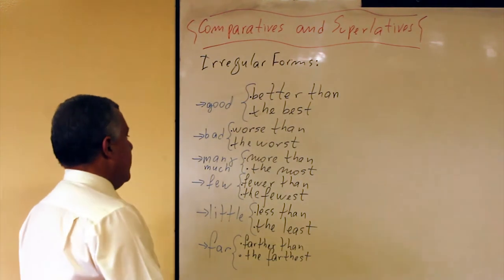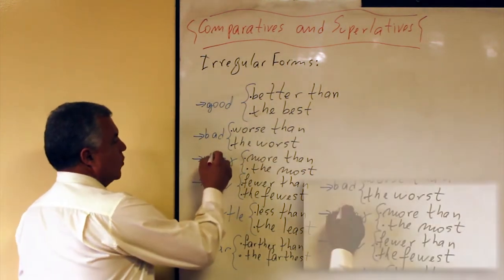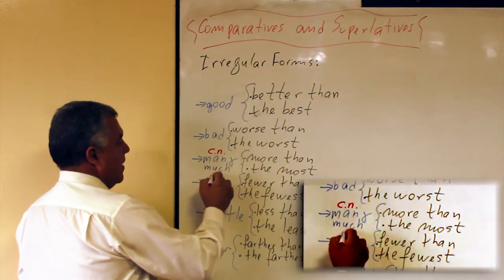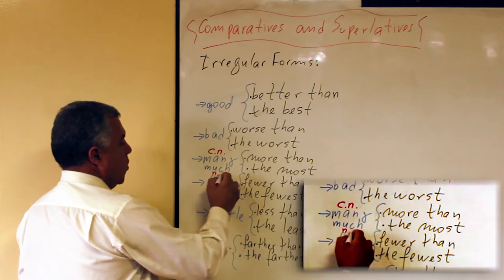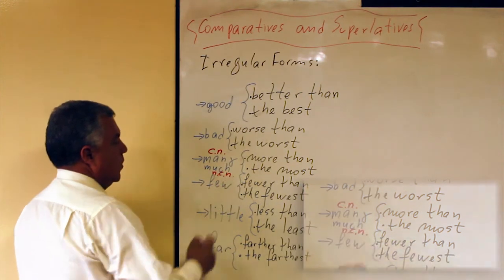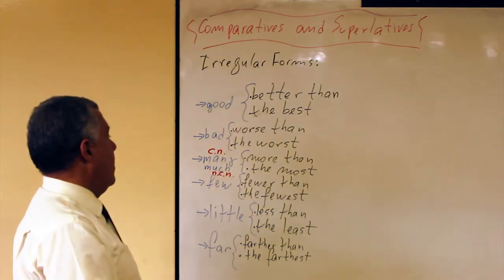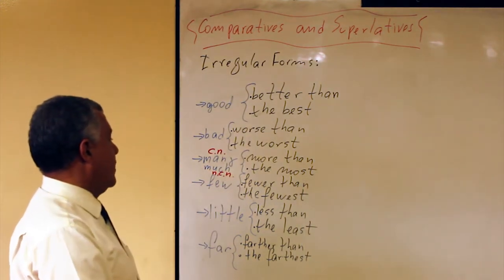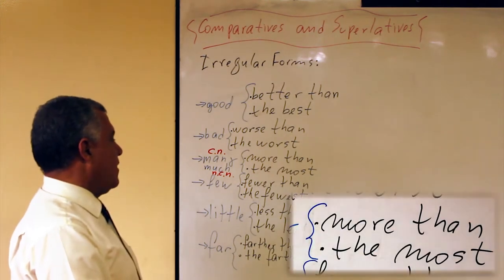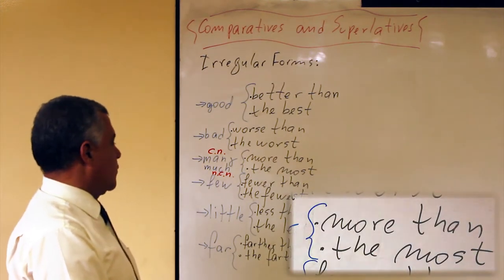First of all, with many we have to use comfortable nouns. With much, no comfortable nouns. Then, many and much: comparative is more than, the superlative is the most.